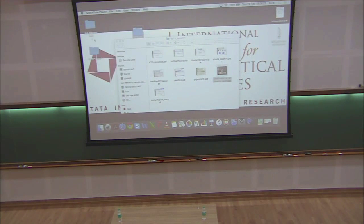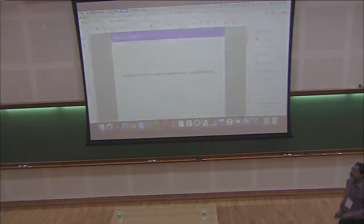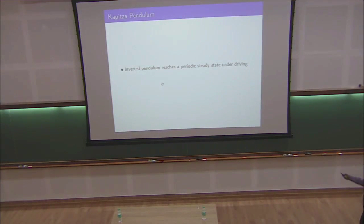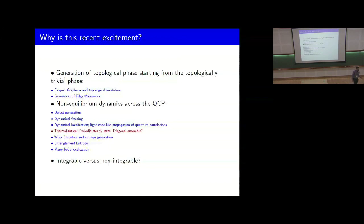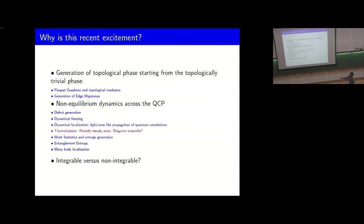Now, why is this excitement now? Because this is known, this is known as Kapitza pendulum, known since the time of Kapitza. Why is this recent excitement? It comes because of the fact that you can do similar things with quantum many body systems. You sit in one phase, give periodic driving. Experimentally, this is achieved by shining light. And you can go to the phases which are, for example, topologically non-trivial. So, generation of topological phase starting from topologically trivial phase.